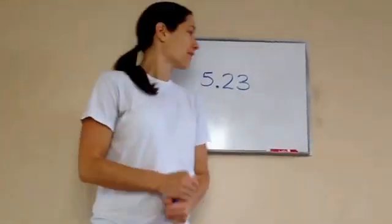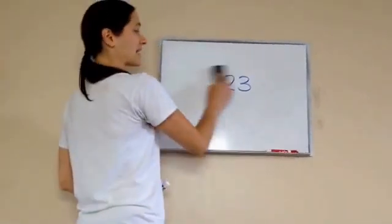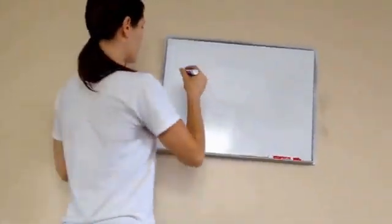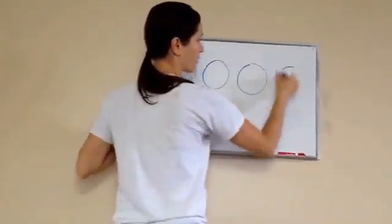Okay, fifth grade lesson 23 and we're doing recognizing halves. So I'm going to draw some pictures up here for you to see what I'm talking about. Let's just take a few circles. I'll do four of them.